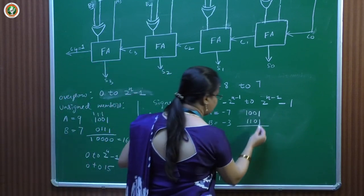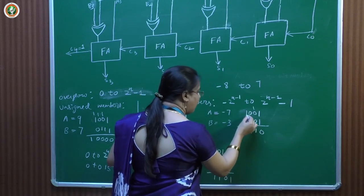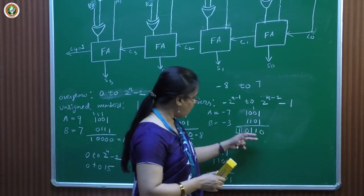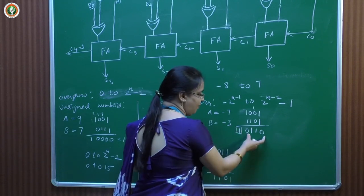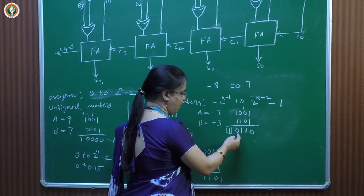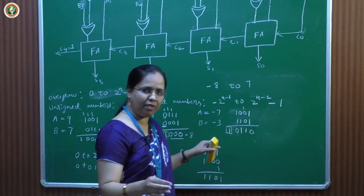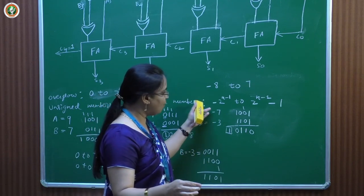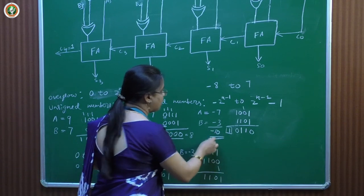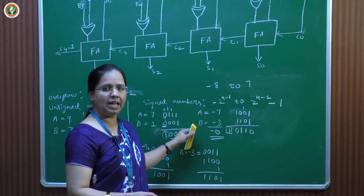Performing the addition of 1001 and 1101: the result occupies one extra bit. If we ignore that extra bit and use only the 4-bit result, the MSB is 0, indicating a positive number. But we expected a negative result from adding two negative numbers — getting a positive result is an overflow. Also, −10 is outside the range −8 to 7, confirming overflow.